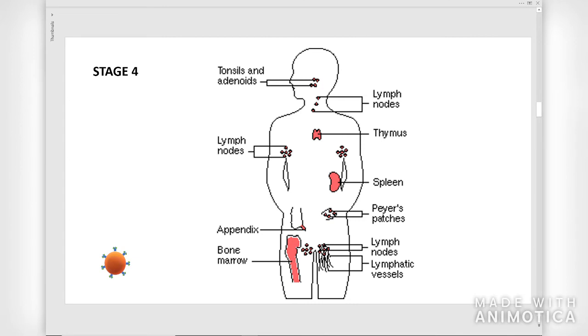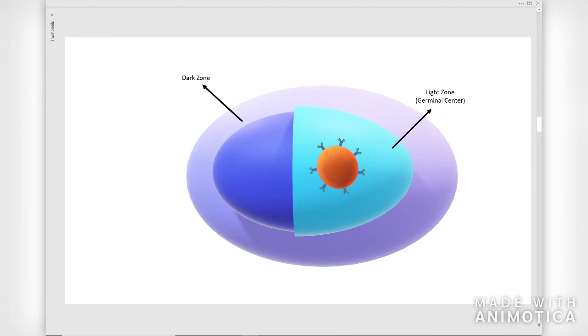Stage 4. The immature B cells then leave the bone marrow by expressing S1P receptor which attracts S1P protein in the blood. They migrate to the germinal center in the secondary lymphoid organs such as lymph nodes and spleen. Within the germinal center, B cells undergo rounds of division, affinity maturation, and somatic hypermutation.